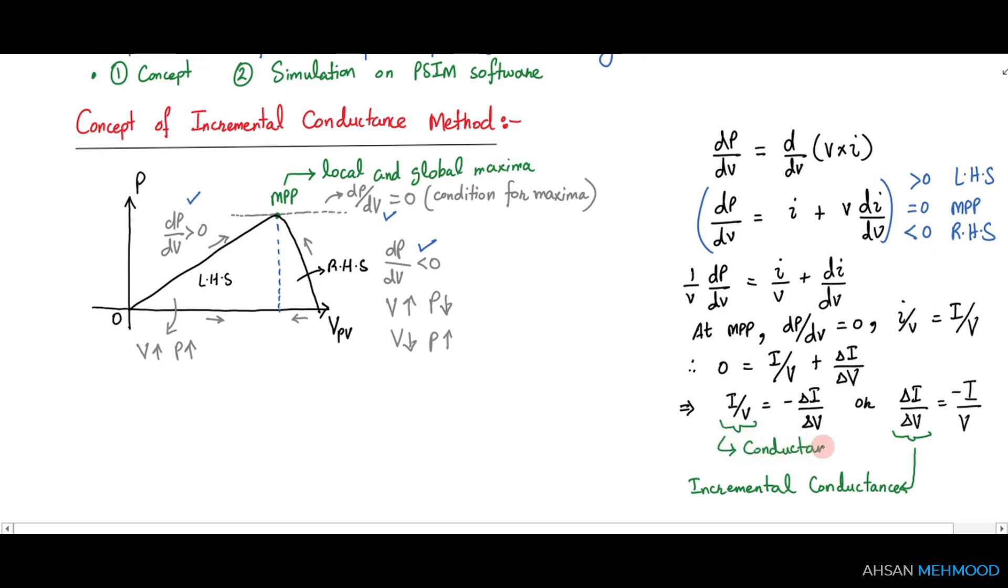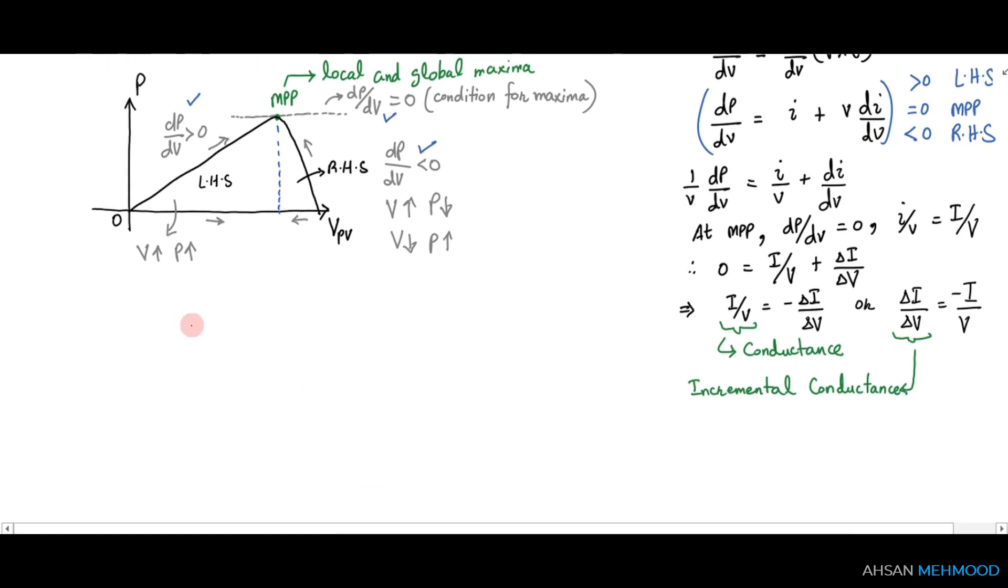Now that we have grasped the fundamental concept, we can use this logic to construct a flowchart in which we can perturb the panel's voltage and observe the incremental conductance, then determine if we are on the left-hand side or on the right-hand side and proceed to the maximum power point accordingly.